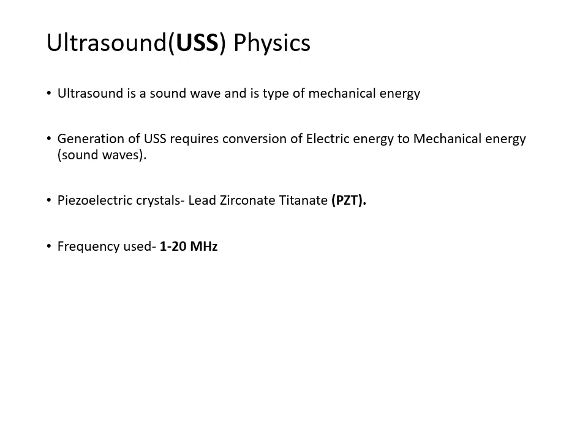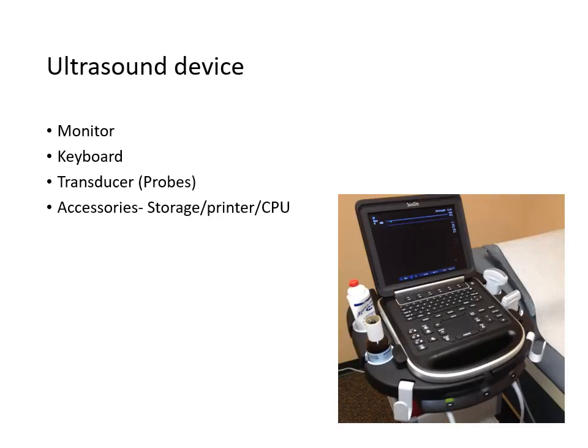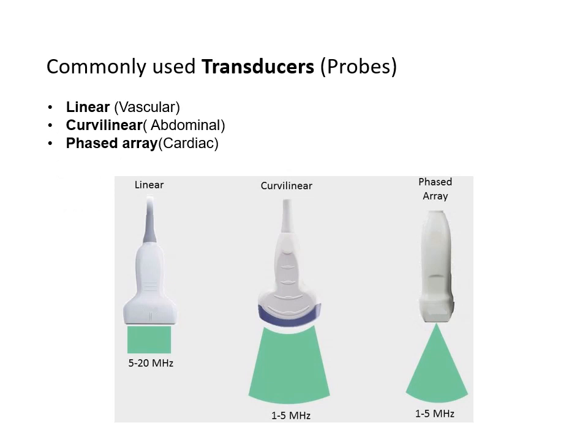The frequency used in ultrasound or point-of-care is from 1 to 20 megahertz — far more than what a human being, animals, birds, or even insects can hear. The ultrasound device used in the emergency department or acute setting is basically a laptop device. It has a monitor, keyboard, and several transducers or probes, plus accessories such as a CPU, printer, or storage device.